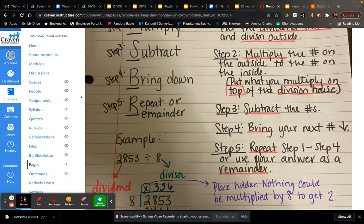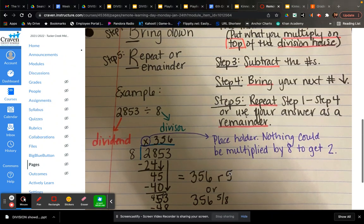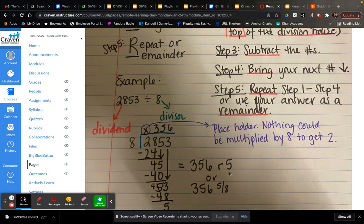Step number three, you're going to subtract. Then you bring down your next number and then you repeat steps one through four until you get your answer or you get a remainder. So again, depending on what the question is asking.